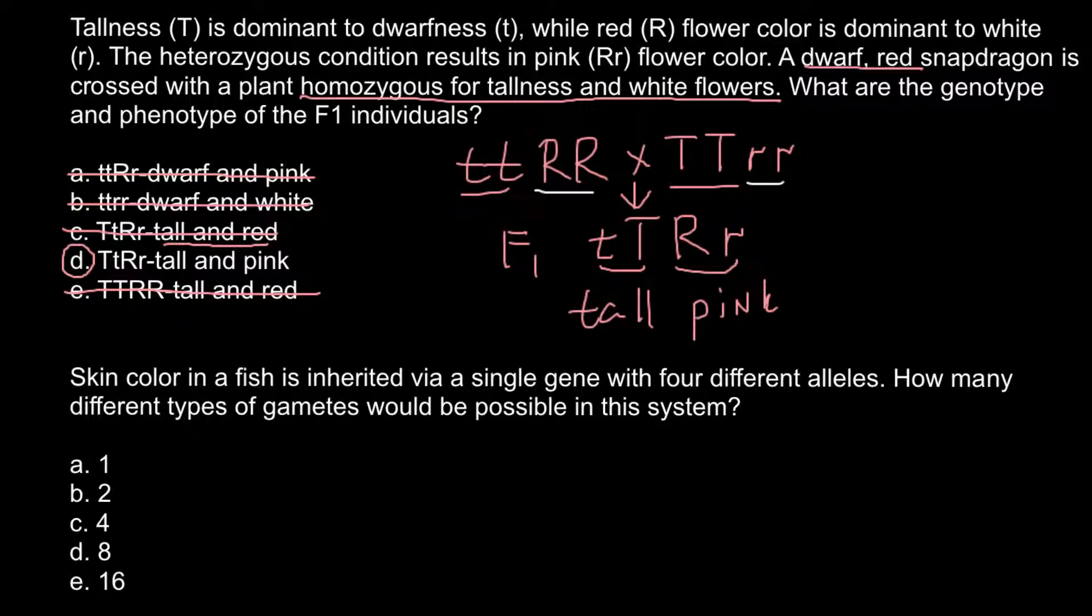Skin color in fish is inherited via a single gene with four different alleles. How many different types of gametes would be possible in this system? This is a very easy question. As long as we have four different alleles for a single gene, for example, this can be A, B, C, and D.